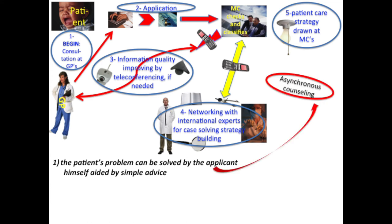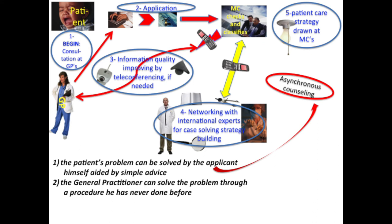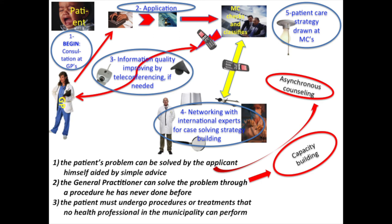The second possibility: the general practitioner can solve the problem through a procedure he has never done before — for instance, carrying out an ultrasound scan to diagnose gallstones in the gallbladder. The action is to build up capacity by video teleconferencing or by sending videos or voice-recorded animated PowerPoint presentations. The third possibility: the patient must undergo procedures or treatments that no health professional in the municipality can perform — for instance, surgery of the highest complexity. The action is to appoint the proper facility to refer the patient.